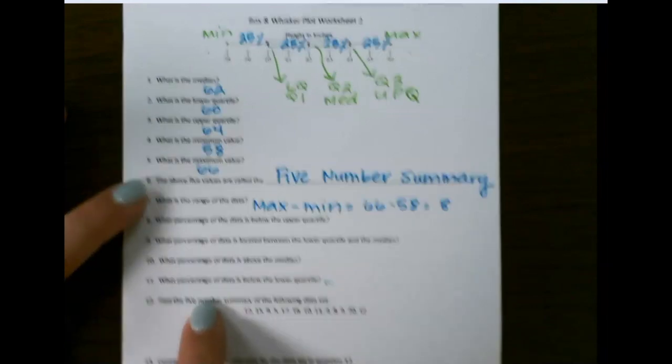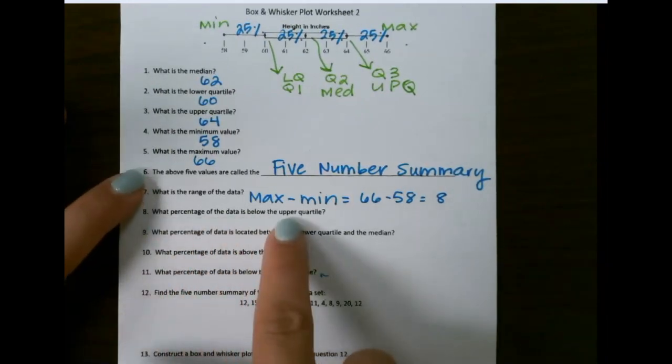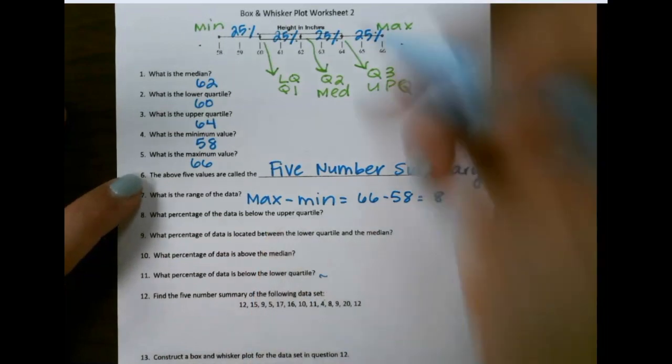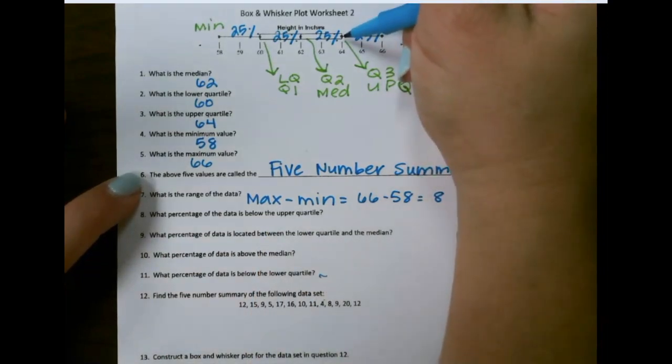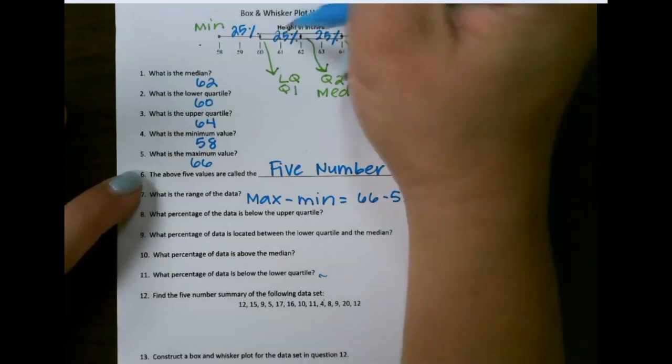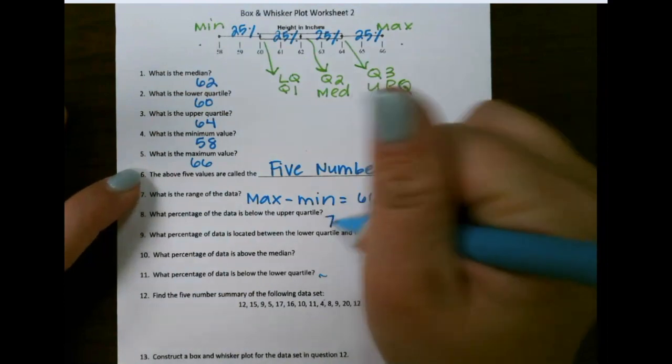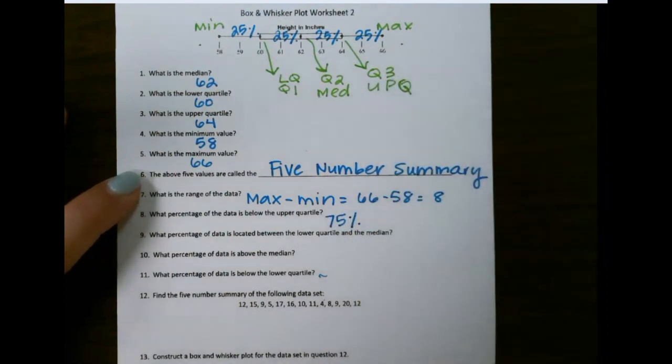Now let's start looking at the percentages. So what percentage of the data is below the upper quartile? Remember, this is the upper quartile, and you need to count how many quartiles are below that. That would be 1, 2, 3, and if each of those is 25%, that would be 75%.